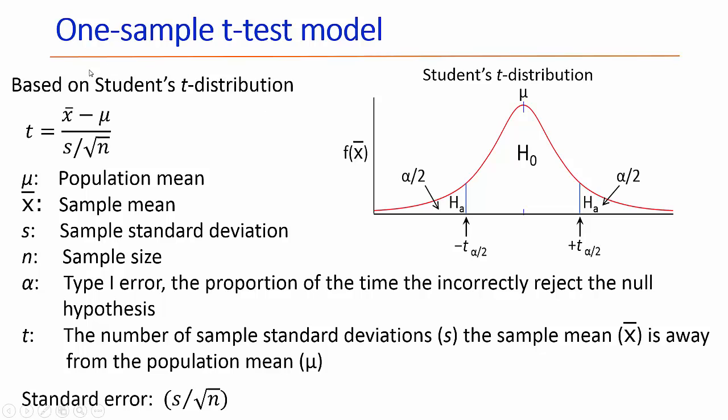The equation we're using to calculate our test statistic is this one. We're going to calculate t. t is actually the number of sample standard deviations that the sample mean x bar is away from the population mean mu. So when we're calculating t, we're trying to see where we are along this distribution. Here I'm showing what we call the critical values of t, and those values would be the cutoffs.